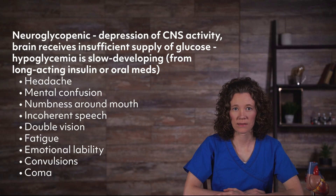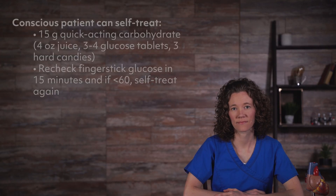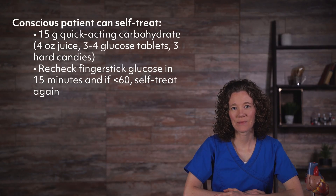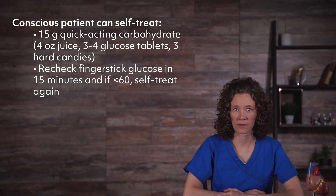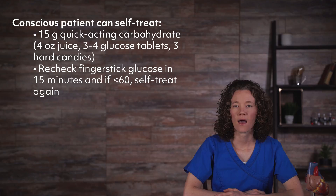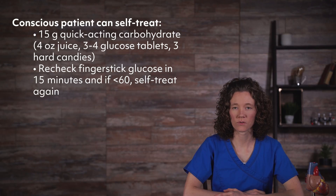If a rapid drop in blood sugar occurs and is allowed to persist, both the sympathetic and central nervous system signs usually occur. Diabetic patients should be educated about recognizing signs of hypoglycemia and how to treat it. As long as the patient is conscious, they should self-treat.